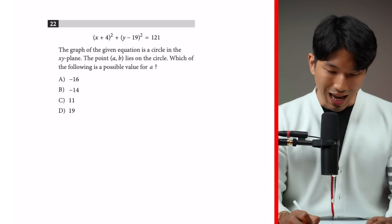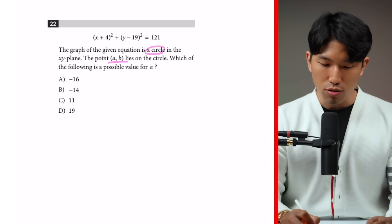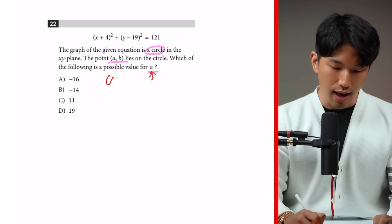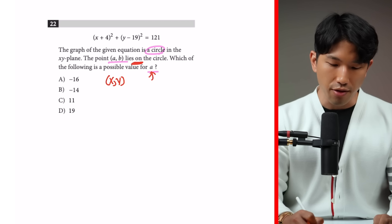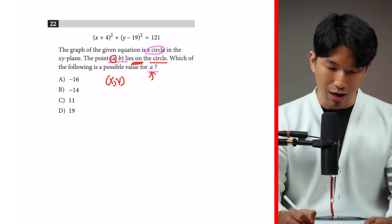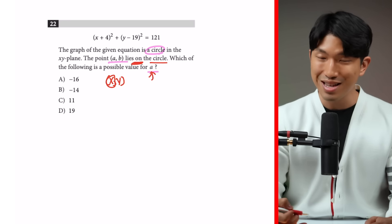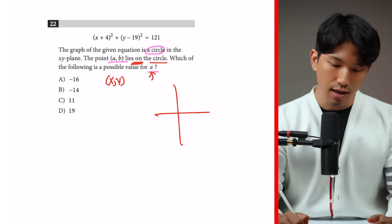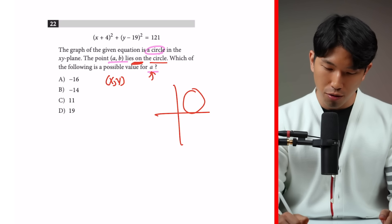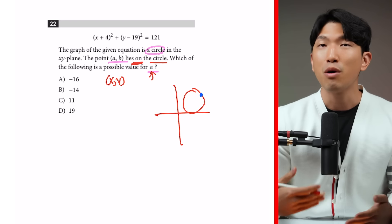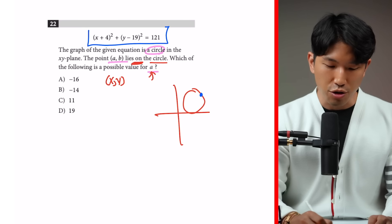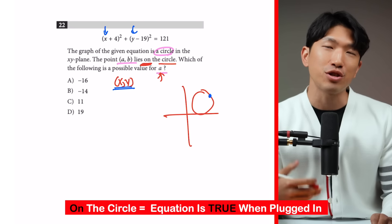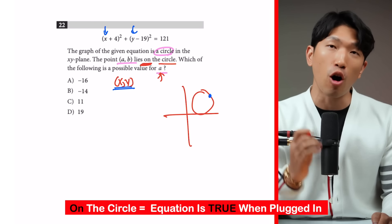The graph of the given equation is a circle in the XY plane. The point (A, B) lies on the circle. Which of the following is a possible value of A? So A is going to be the X coordinate of the point that lies on the circle. We have to find one possible value of A. The key point here is the idea of a point lying on the circle — if a coordinate is on the circle, then when you plug it in for X and Y, the equation is going to be true.